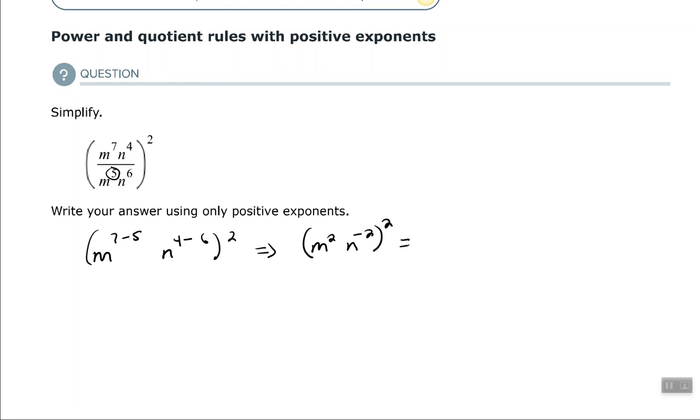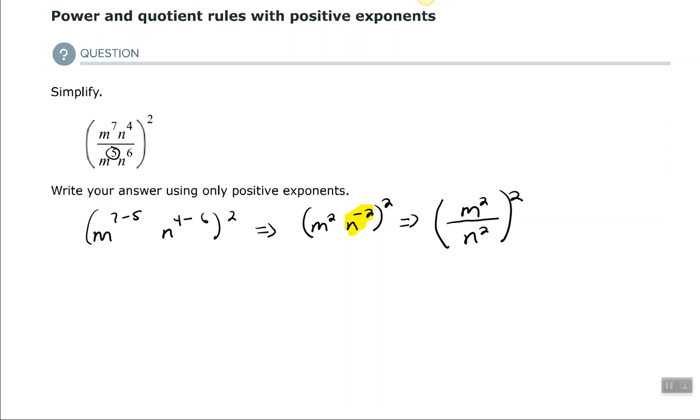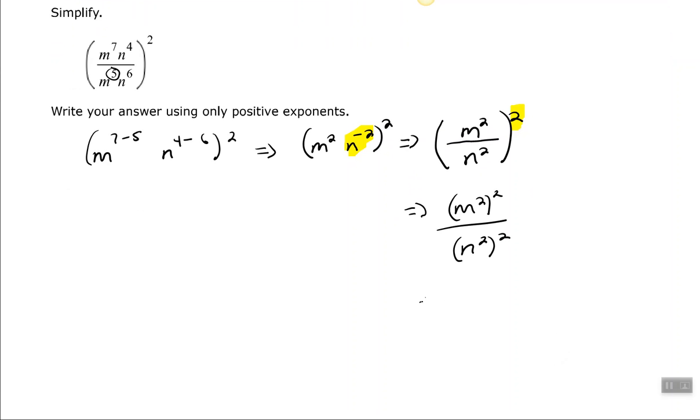Okay. Now, I don't want to keep that negative exponent in there, so I'm going to move that n, base n, down to my denominator to change the sign of the exponent to make the exponent positive. Now, I'm going to raise both of those to the 2nd power. So I've completely simplified inside of the parentheses, and now I'm going to raise each one of those to that 2nd power, which gives me the final answer of m to the 4th over n to the 4th.